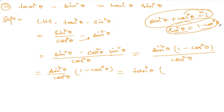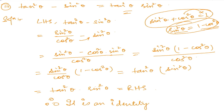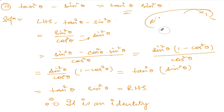So instead of 1 minus cos square theta, we write sine square theta, which gives us tan square theta times sine square theta — which is equal to the right hand side. Therefore it is an identity. Thank you so much, I hope the answer is correct. If you have any doubts, please write in the comments below. We'll meet in the next video.